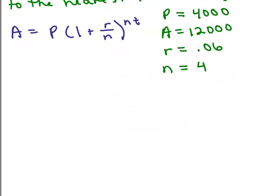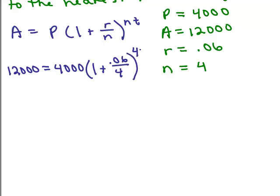We're just going to fill those numbers in to this formula. So A is going to be our 12,000 equals 4,000 times 1 plus r, which is 0.06 divided by 4, to the 4t. I don't know t.